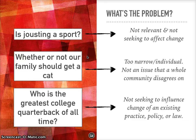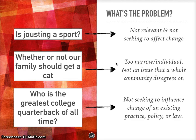Let's take a look at this one: 'Whether or not our family should get a cat.' We talked about this briefly yesterday, but this question is an example of a question that is too narrow or too individual — it's far too specific to an individual family. It's not an issue that families in general are dealing with. So we need to make sure that whatever editorial question you've chosen, it is an issue that an entire community disagrees on or has differences of opinion on, not just a very small group within a community.